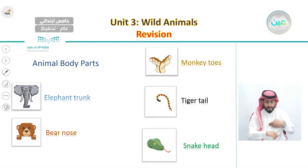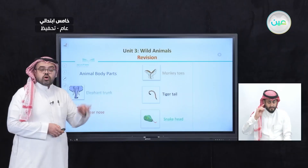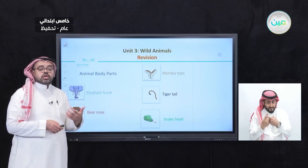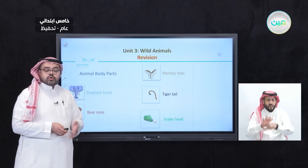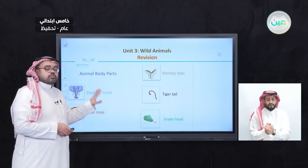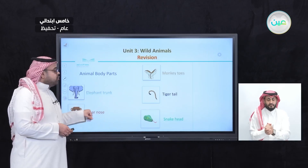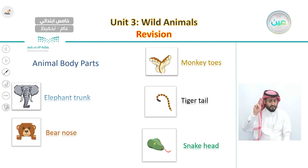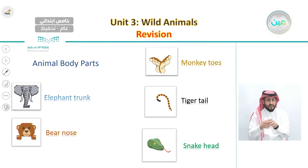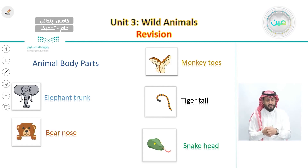So not only did we learn about animals, but we also learned what to call the body parts of each animal. We now know: the trunk for an elephant, the nose for a bear, the toes for a monkey, the tail for a tiger, and the head for a snake.